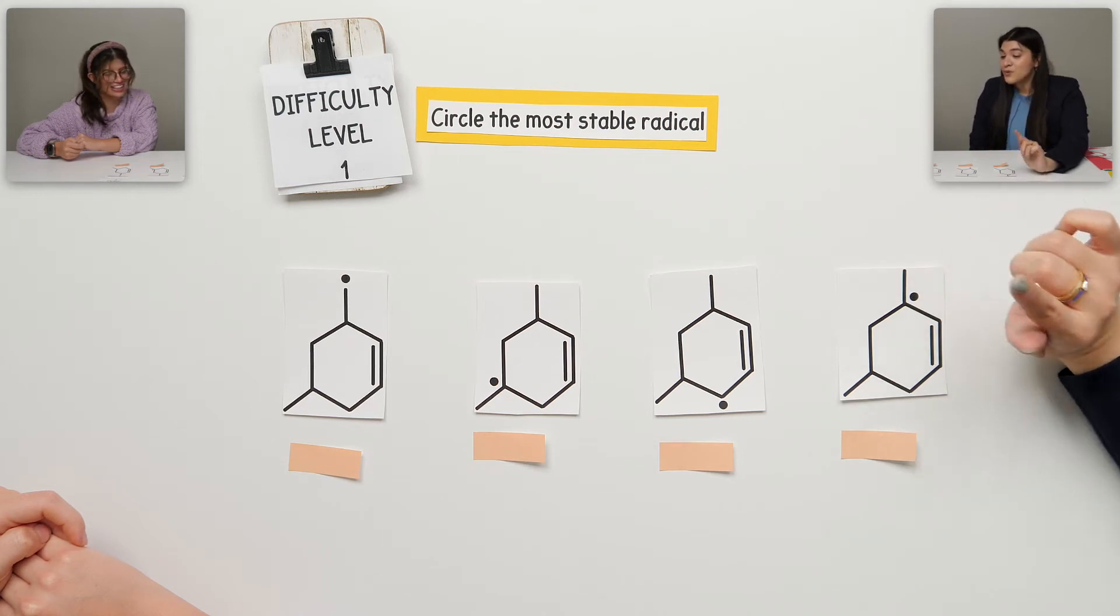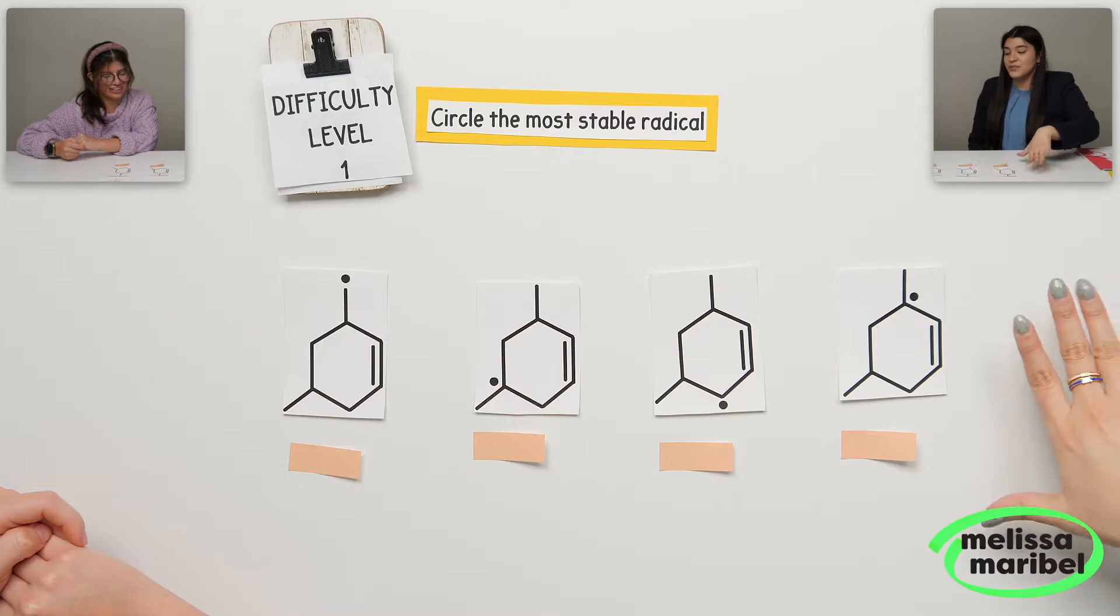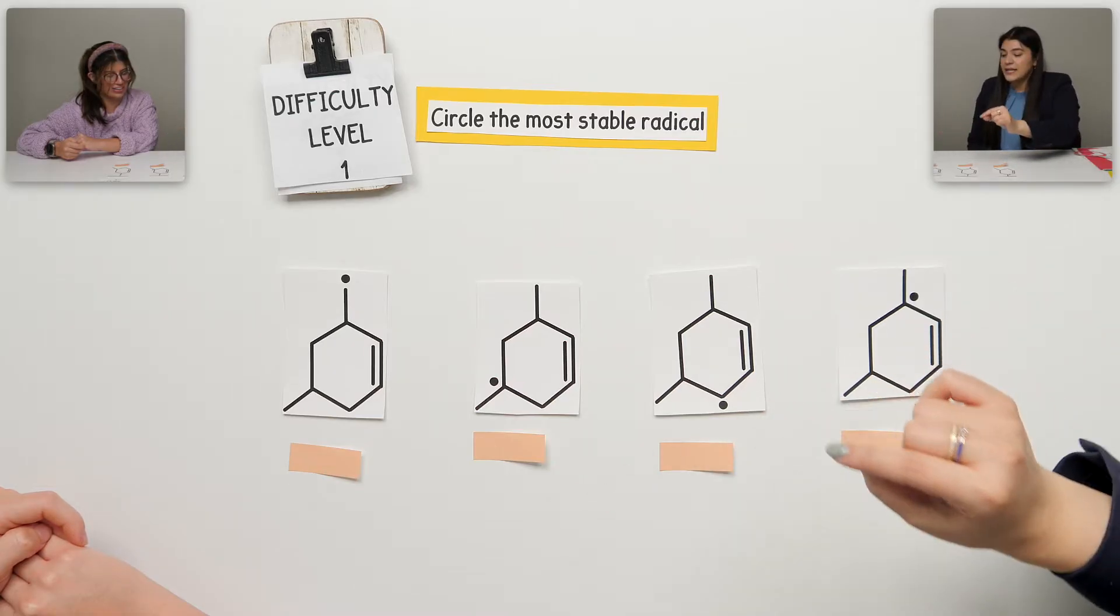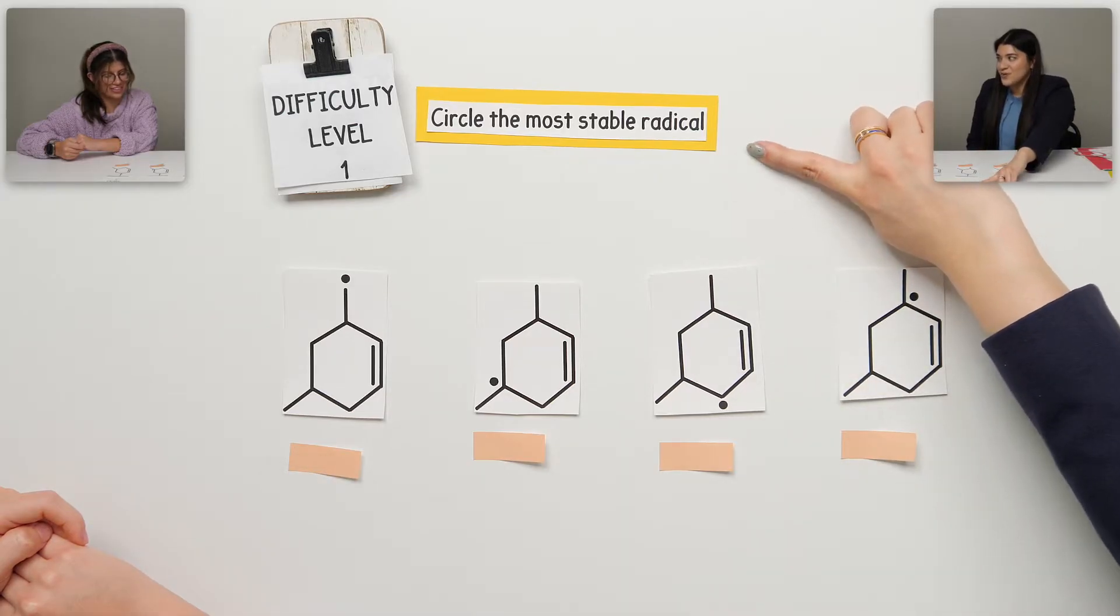First question is to circle the most stable radical. And within this, I also want us to label what each type would be, like classify the radical. So first off, what do you think the most stable would be?